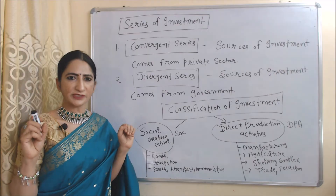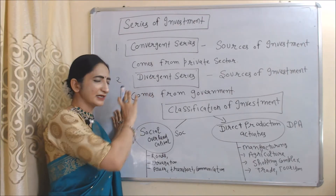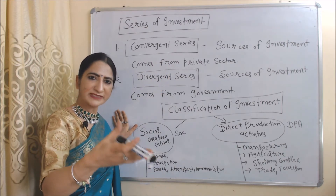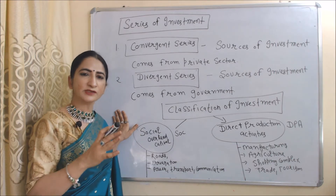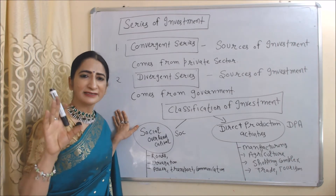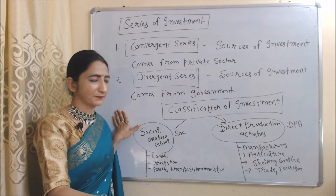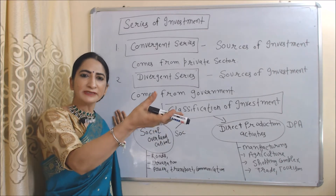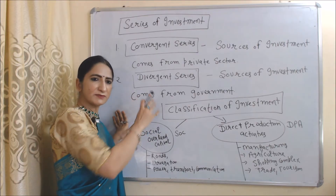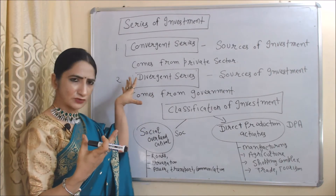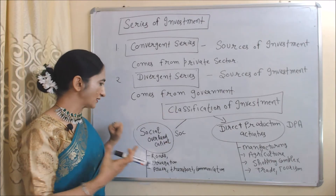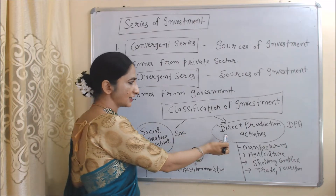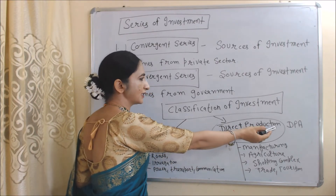This theory talks about two series of investments: convergent series and divergent series. In the case of a convergent series, the sources of investment come from the private sector, so the motive of this investment is earning profit. On the other hand, in the case of a divergent series, sources of investment come from the government, so the motive is social welfare. Based on these two series, we classify investment into two parts: first is social overhead capital, or SOC; second is direct production activities, or DPA.